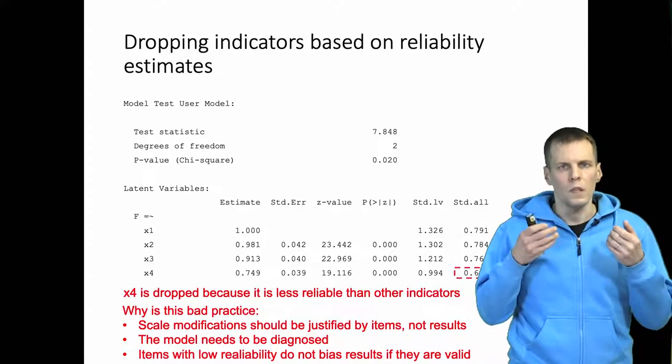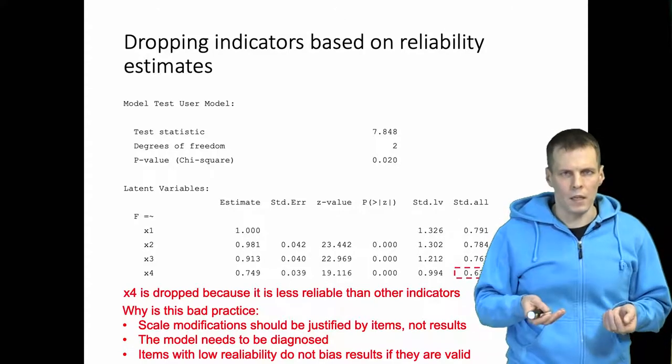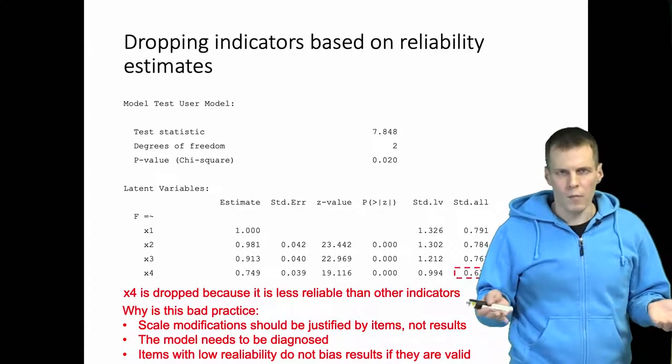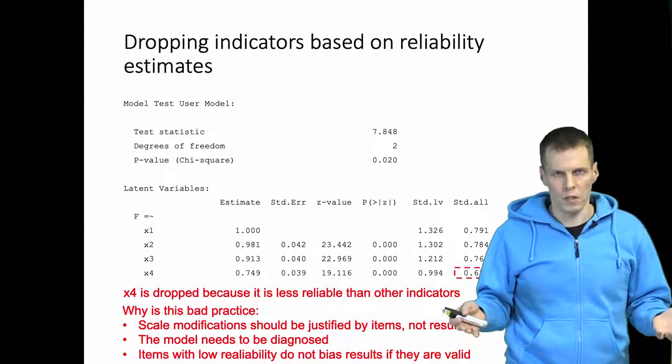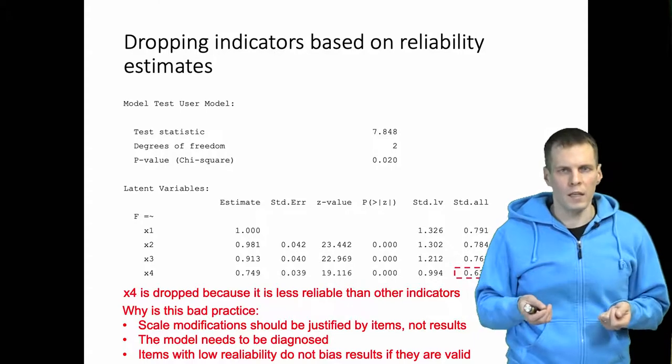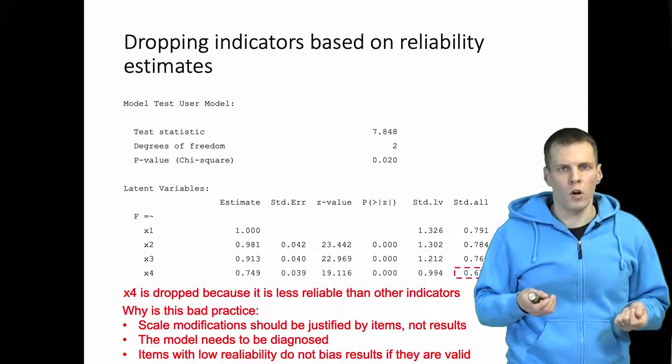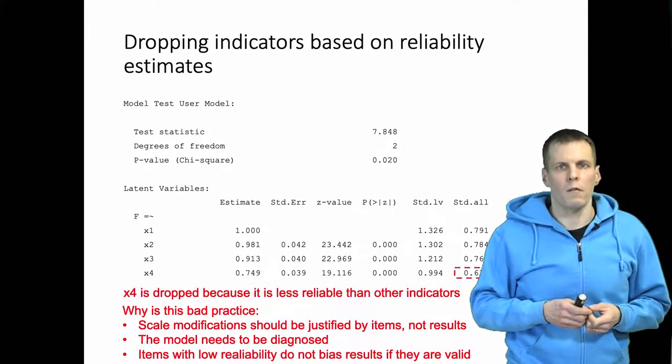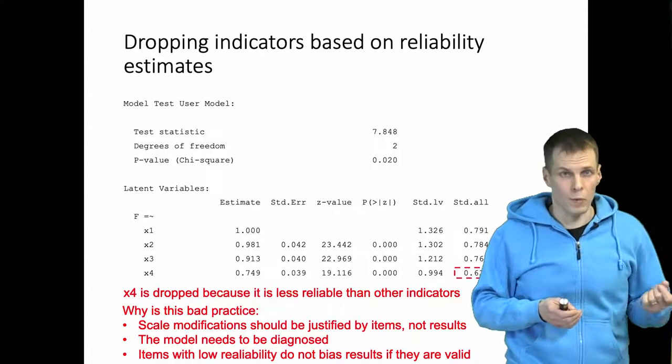Also, estimating a reliability to be lower can be an unreliable estimate itself if the model is misspecified. So it is possible that there is some dimensionality in the scale that you don't model, and for that reason one of the indicators is estimated to be less reliable than others.